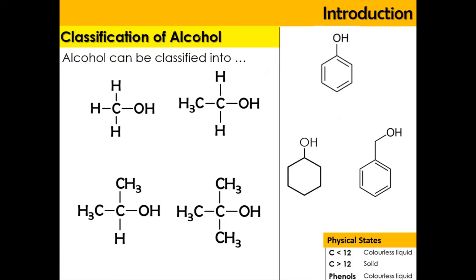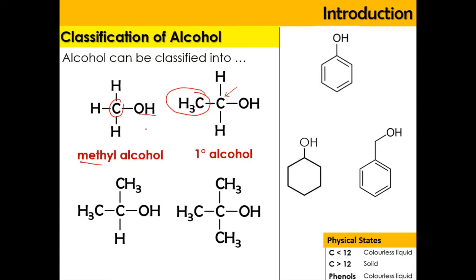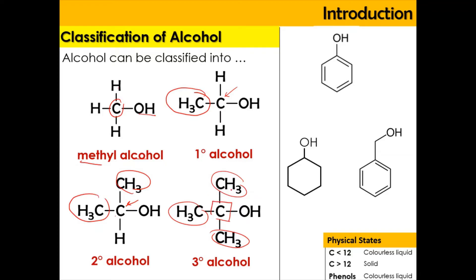Now we're going to do the classification of alcohol. Alcohol can be classified into methyl alcohol, where the carbon attached to the OH is not bonded to any alkyl group. When the carbon attached to OH has one alkyl group, it is primary alcohol. When it has two alkyl groups, it is secondary. When it has three alkyl groups, it is tertiary. For phenol, there is no classification because classification only applies for carbon-carbon single bonds — the carbon-carbon double bond in the ring cannot be classified.